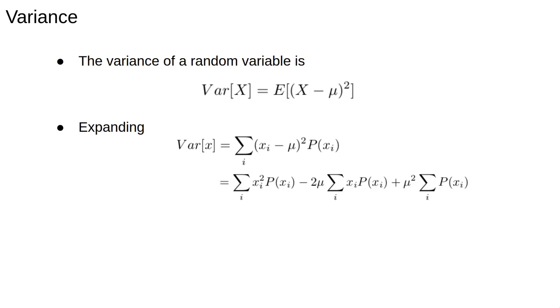First let's see another common way to calculate the variance. We expand the square then use the definition of expectation and we find that the variance is the expectation of the square minus the square of the expectation. Pause here and make sure you understand this derivation.